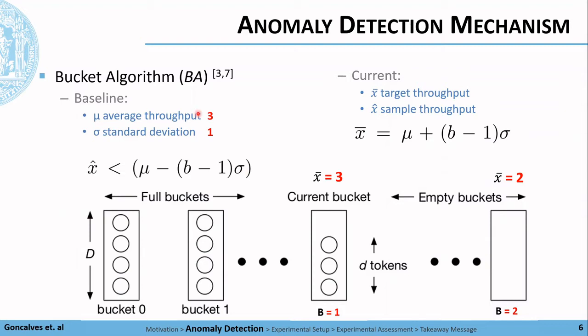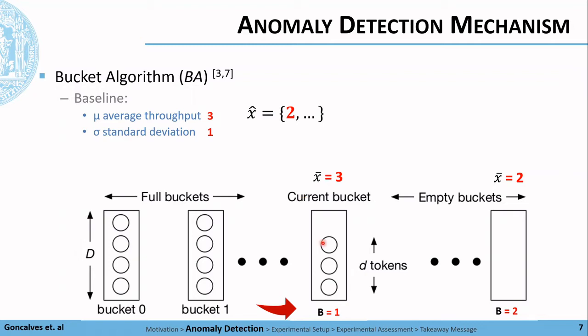Let's assume a hypothetical instantiation: average throughput of 3, standard deviation 1, 2 buckets with the same depth of 4, the first bucket has already 3 tokens, and the sample throughput that is observed in the system is 2. This will imply that a token should be added in the first bucket. The next sample is also 2, which again will add a token in the bucket.